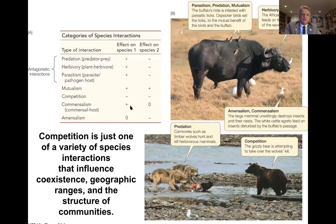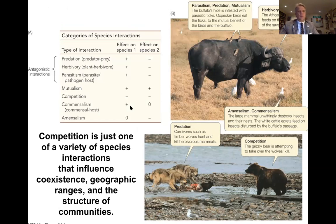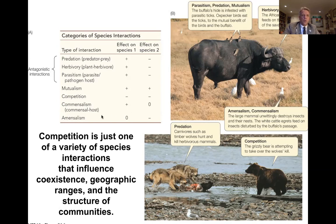Competition is just one of a variety of species interactions — we could teach a whole course on species interactions. In addition to competition, we'll talk later in the lecture about predation and herbivory. We're not going to talk much about parasitism, but we will touch on mutualism. Interaction among organisms is a fascinating area of ecology that could merit its own course.